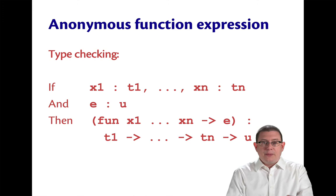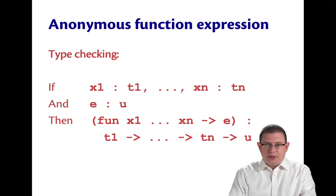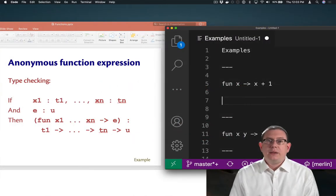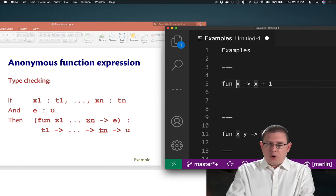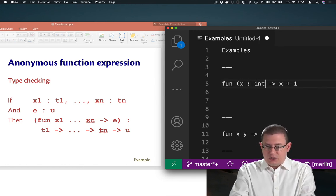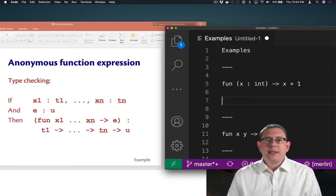Let's look at a couple examples of this to make it a little more concrete. Let's try type checking the anonymous function that increments its argument. So if we have fun x arrow x plus 1, of course we know that the programmer could have written in a type annotation on x, saying that x has to be an integer. OCaml figures that out through type inference if the programmer leaves it out.